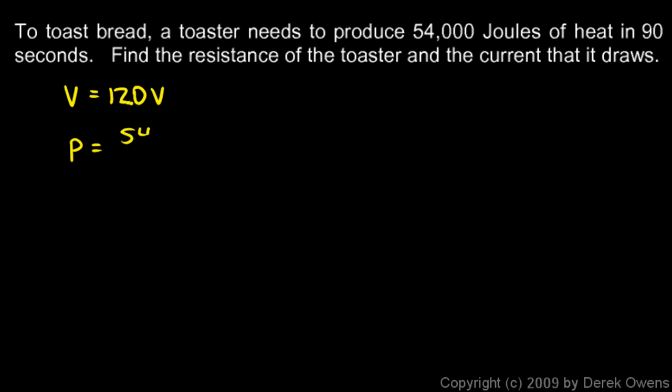I'm told that we need 54,000 joules of heat in 90 seconds, so I can find the power. Power is energy over time, so I'm just going to use those numbers: 54,000 joules divided by 90 seconds. That gives me joules per second, which is watts. And when I do 54,000 divided by 90, I get 600 watts. So that's the power used by this toaster. Now I can find the resistance of the toaster and the current that it draws. The resistance: I can say R is V² over P.